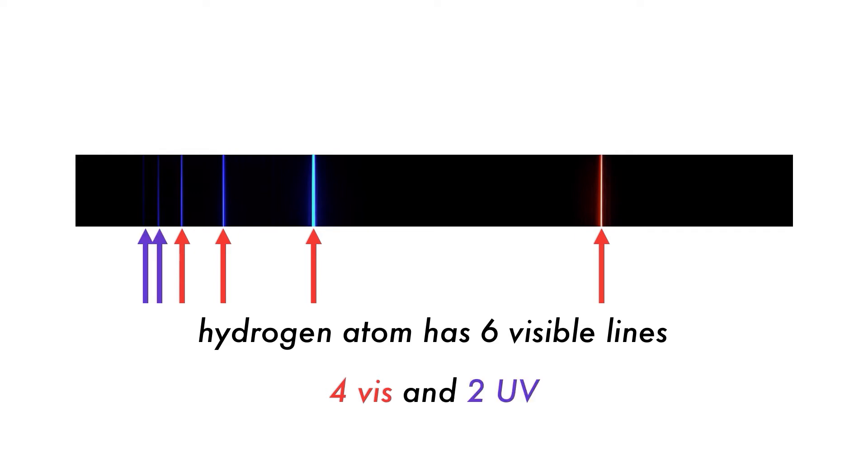If these transitions occur with frequencies in the visible region of the electromagnetic spectrum, then they will give rise to visible lines, lines visible to the naked eye. The hydrogen atom has six such lines, four in the visible region and two formally in the ultraviolet, but also visible to the naked eye.